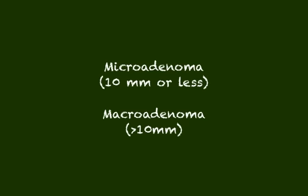What causes elevated prolactin? Prolactin is produced by the lactotrophs in the anterior pituitary, and the most common cause is a prolactin-secreting adenoma. As shown here, the definition of a microadenoma is a tumor that is 10 millimeters or less, while a macroadenoma is greater than 10 millimeters in size.